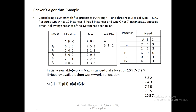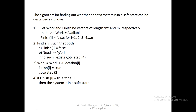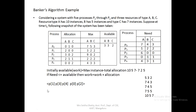Because of Banker's Algorithm, we got the safe execution sequence: P1, P3, P4, P0, P2. The main logic of Banker's Algorithm is: if need ≤ available, then update work = work + allocation and continue; otherwise, take the next process. This is called a safe state — Banker's Algorithm ensures the system is in a safe state with no deadlock.